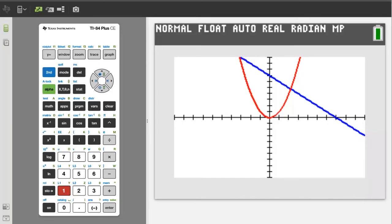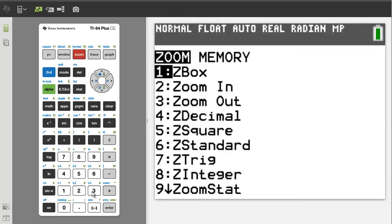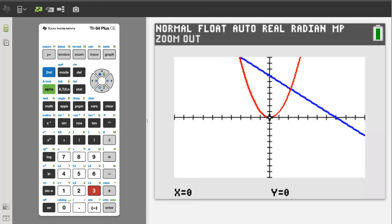Let's try the zoom out feature. Press the zoom button. Zoom out is number 3. Press the 3 button. I will move the cursor up a little. Then press the enter button.